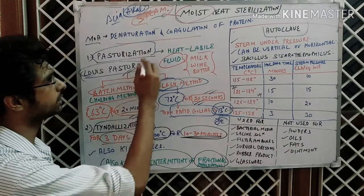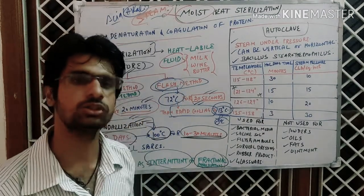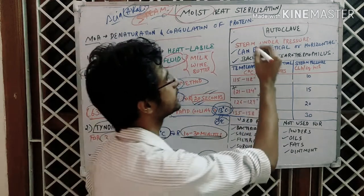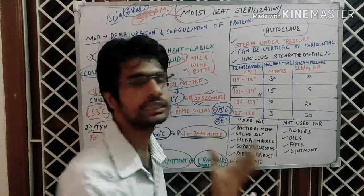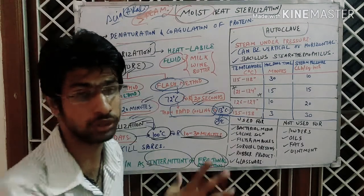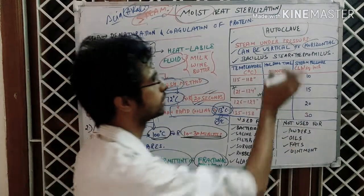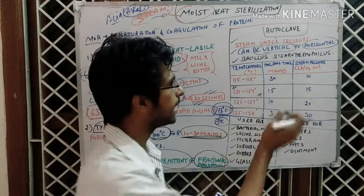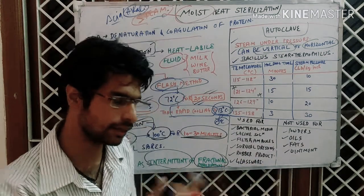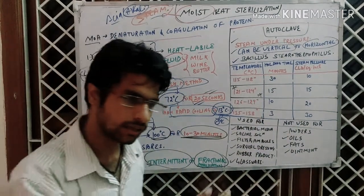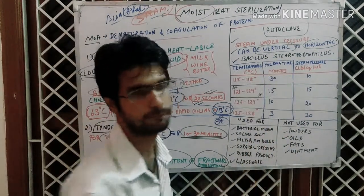Next we come to the laboratory instrument: the autoclave. You can take the pressure cooker as a simple example. It is steam under pressure — just like in a pressure cooker, steam penetrates more deeply. The autoclave can be vertical or horizontal. In industry both are used. The choice between vertical and horizontal depends on the quantity of material to be sterilized: if the quantity is more, we generally use horizontal; if less, we use vertical.